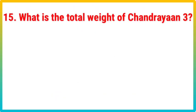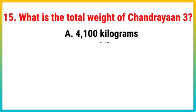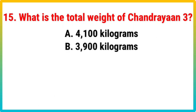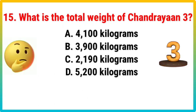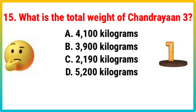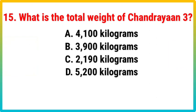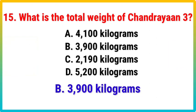Question 15. What is the total weight of Chandrayaan-3? Your options: A. 4,100 kg, B. 3,900 kg, C. 2,190 kg, D. 5,200 kg. Correct answer is B. 3,900 kg.